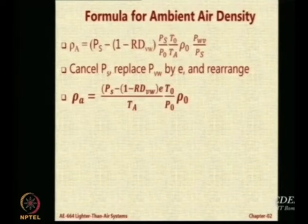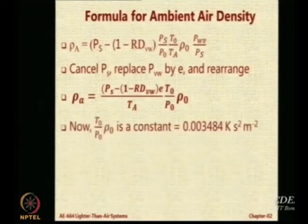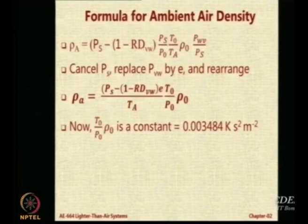Now, interestingly, these T_0 P_0 rho_0 are constants. So you can replace now these numbers by the numerical value of T_0, P_0, which is 273.16 plus 288.13, P_0 which is 101325 Newton per meter square, rho_0 is 1.2256. If you multiply that you get a constant 0.003484 Kelvin by meter square second square.